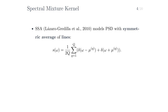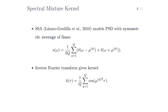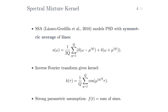The first such approach is the spectral mixture kernel, which is a generalization of the sparse spectrum approximation that we saw in topic 1. Recall that the sparse spectrum approximation models the PSD with a symmetric average of lines, where these lines are placed at μq and minus μq to ensure symmetry of the PSD. If we then inverse Fourier transform the PSD, we get the kernel associated to the sparse spectrum approximation.